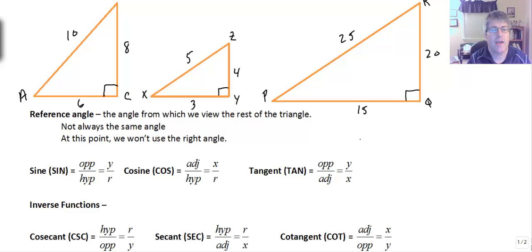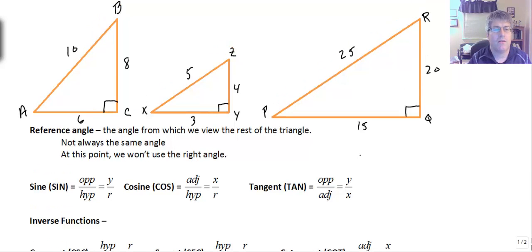When looking for the trig function of any angle, we're finding the ratio based on that angle. It's important to know our reference angle — the angle from which we view the rest of the triangle. We're not going to use the right angle as our reference. So if I want to define the sine of angle A, it is the opposite over the hypotenuse, or y over r. If my reference angle is angle A, working from this angle, the opposite is side BC, or 8, and the hypotenuse is 10.